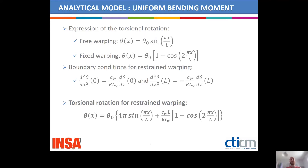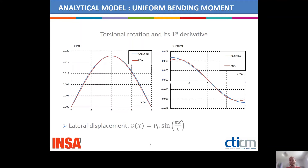We developed an analytical model for which we chose the expression of the torsional rotation for restrained warping given here. This expression complies with the boundary conditions given here, and it is also in good agreement with the two specific cases of free warping and fixed warping, for which we have the exact expression and the approximation. When we compare this expression to finite element analysis, we can see good agreement between the results, even though there is a small difference at supports when looking at the first derivative, but it is still admissible.